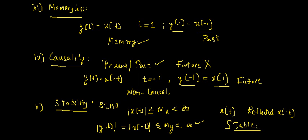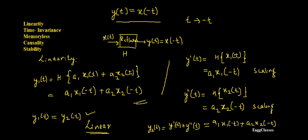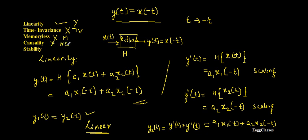To summarize: for the system y of t equals x of minus t, we tested five properties. Linearity: yes, the system is linear. Time invariance: no, it is time variant. Memoryless: no, the system has memory. Causality: no, it is non-causal as it depends on future values. Stability: yes, the system is stable. This is all about the properties — an example on properties of systems. Thanks for watching.